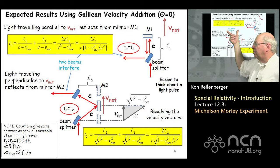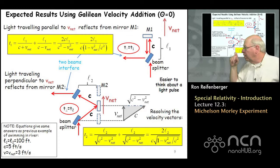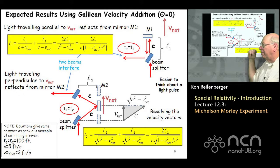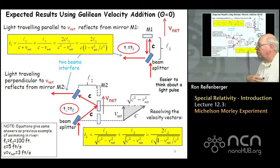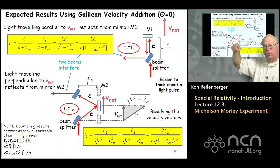I work out the arithmetic for the two cases. The first case is for the Galilean velocity addition when theta is equal to zero, meaning the drift velocity is parallel to the light path of length L1. In all cases, the red arrows indicate the trajectory of the light beam, and I'm calculating how long it takes for the light beam to go up and back through distance L1 using Galilean velocity addition.